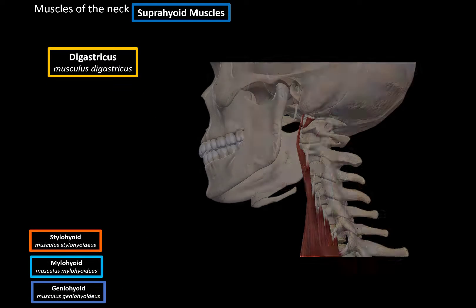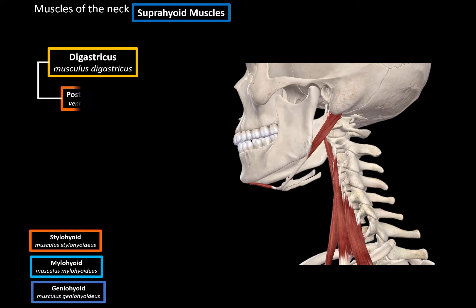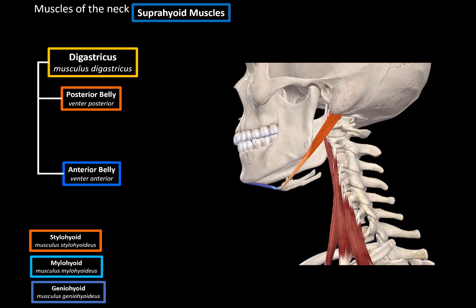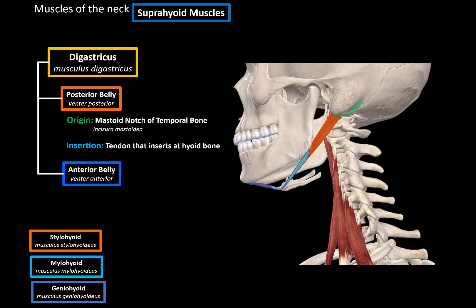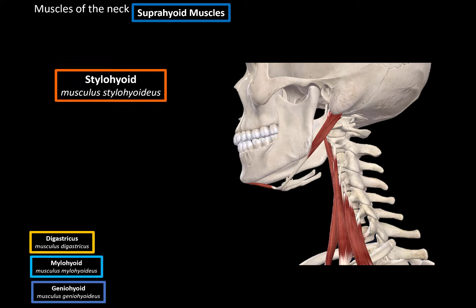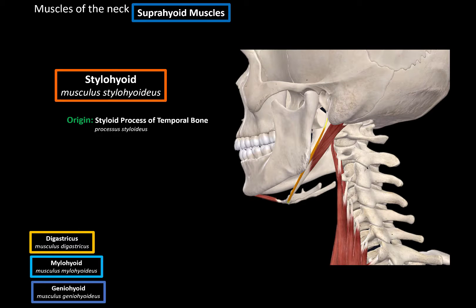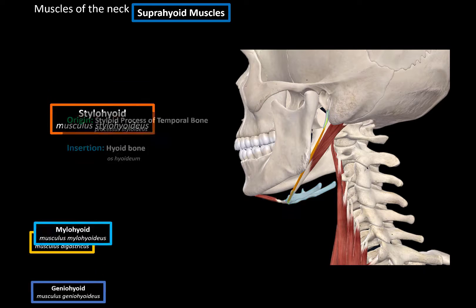The digastric muscle consists of two parts: a posterior belly behind the hyoid bone and an anterior belly in front of it. The posterior belly originates from the mastoid notch of the temporal bone and inserts at the tendon that attaches to the hyoid bone. The anterior belly originates from that same tendon and inserts at the digastric fossa of the mandible. Its main function is to pull the hyoid bone to keep it in place. Next is the stylohyoid muscle, which originates from the styloid process of the temporal bone and inserts at the hyoid bone, also pulling it to keep it in place.